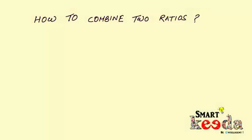Hello friends, today we are going to learn how to combine two different ratios into one. We'll do it using the n rule method, which is very simple to understand.